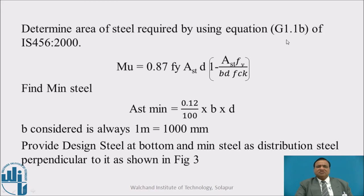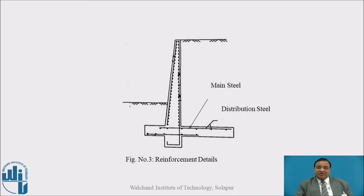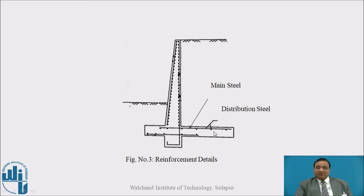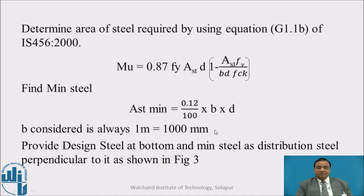Determine the area of steel required using equation G.1.1.1b, since it is an under-reinforced section. MU = 0.87 × fy × Ast × d × (1 - Ast × fy / (b × d × fck)). Minimum steel is 0.12/100 × b × d, where b considered is always 1 metre. Provide the design steel at the top — not the bottom — and the minimum steel as distribution steel perpendicular to it, as shown in figure 3. The reinforcement is at the top because the heel slab has sagging bending and bends upward. Distribution steel is 0.12% and design steel is as per the calculation.